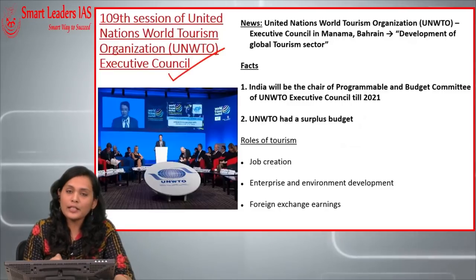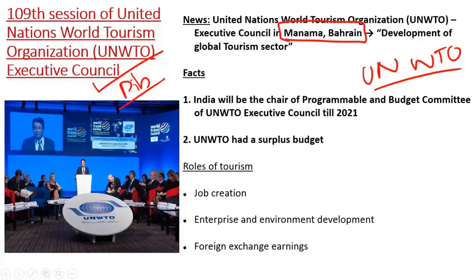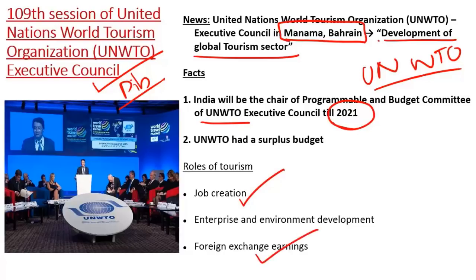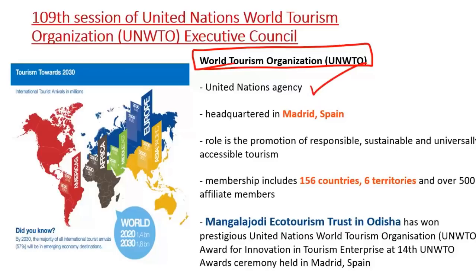The next article is about the 109th session of the United Nations World Tourism Organization's Executive Council meeting, taken from PIB. This meeting is currently happening in Manama, Bahrain. The theme is titled 'Development of Global Tourism Sector.' India is the current chair of the UN World Tourism Organization and will continue to hold the chair till 2021. The aim of the meeting is to increase job creation, facilitate foreign exchange earnings, and develop a conducive environment for the tourism sector.